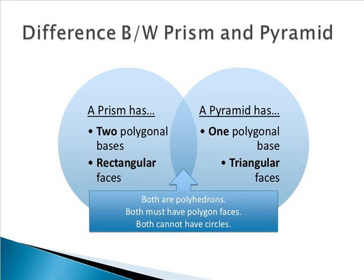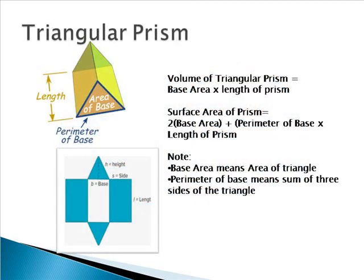The basic difference between a prism and a pyramid is the bases. A prism has two polygonal bases, while a pyramid has only one base and one top point called the apex. The faces other than the base in a prism can be rectangles or parallelograms, but in a pyramid they are always triangular. Both are polyhedrons with polygon faces — they can't have circles.